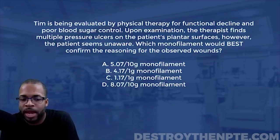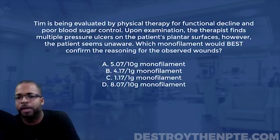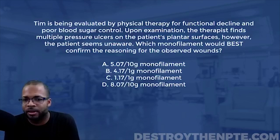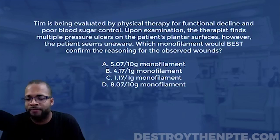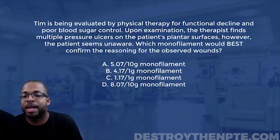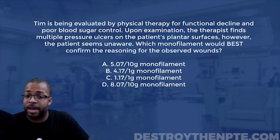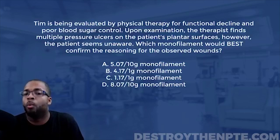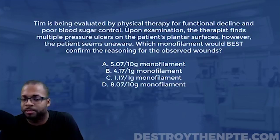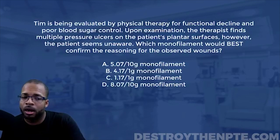This patient likely has diabetic peripheral neuropathy and isn't feeling very well. One of the strategies we can use in PT is monofilament testing. That's exactly what our question is asking — which monofilament would best confirm why we're seeing these wounds. Monofilament testing helps us determine if a patient has normal sensation or protective sensation, which guides our education and treatment plan.